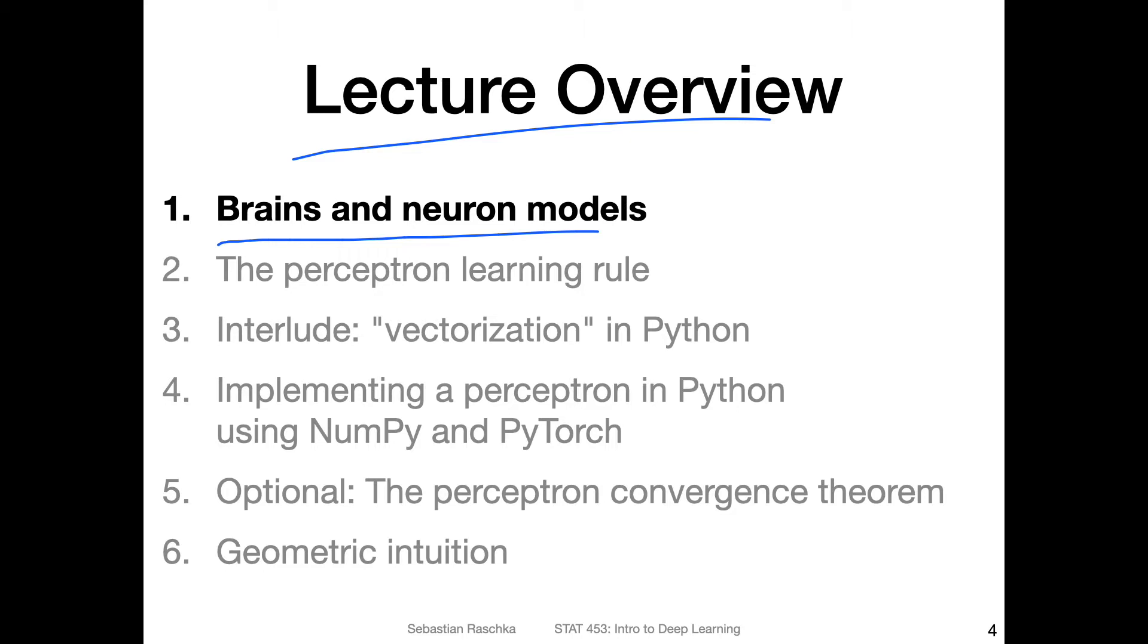And then in the next video, we will talk about the perceptron learning rule, which is related to the Rosenblatt perceptron, which we briefly talked about in the last lecture. And then I will have a short interlude on vectorization in Python. That is just a quick note of how we can make your computational code in Python run more efficiently. So that is usually by replacing for loops with vector dot products, because that's something we're going to need in the next video when we talk about implementing a perceptron in Python using NumPy and PyTorch.